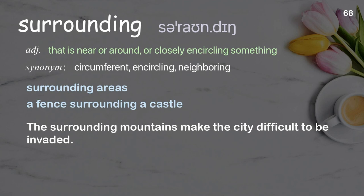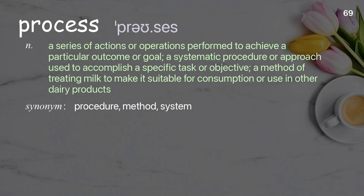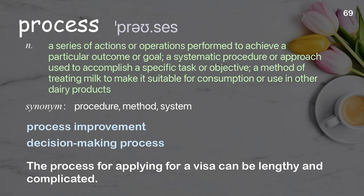Process: a series of actions or operations performed to achieve a particular outcome or goal; a systematic procedure or approach used to accomplish a specific task or objective. Examples: the process for applying for a visa can be lengthy and complicated.